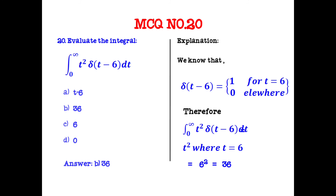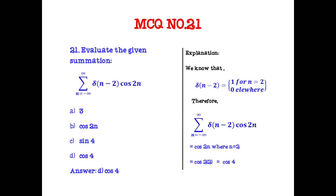Evaluate the integral: ∫₀^∞ t² · δ(t − 6) dt. The answer is 36. Since δ(t − 6) equals 1 only when t = 6, we substitute t = 6 into t², and 6² = 36.